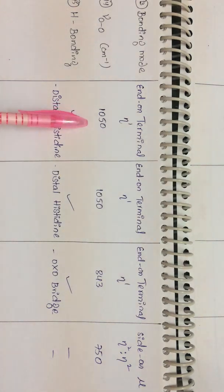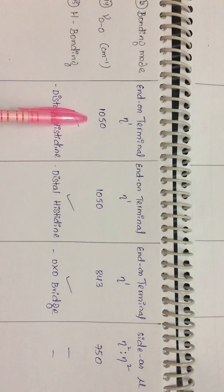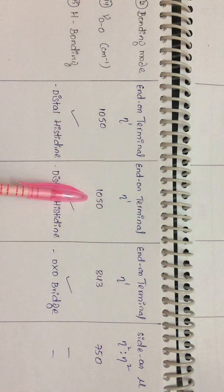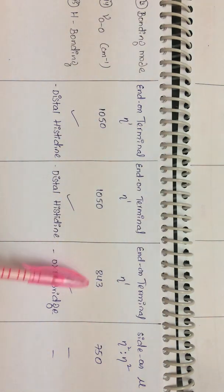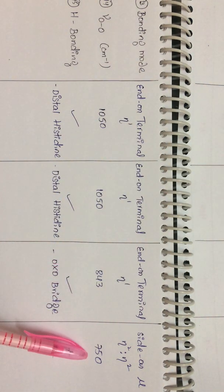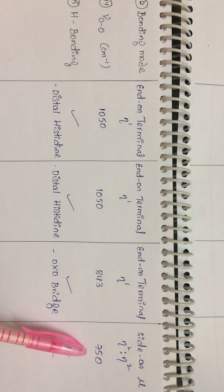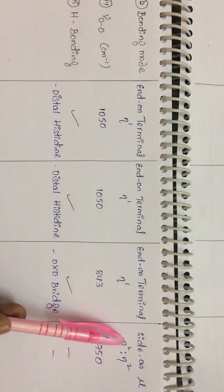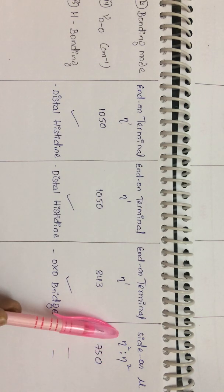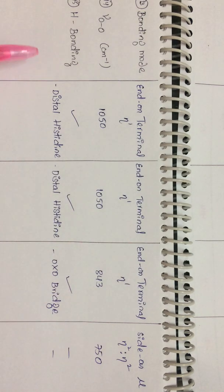Regarding stretching frequency: for hemoglobin and myoglobin it is around 1050 cm⁻¹, indicating a superoxo form. For hemerythrin it is 843 cm⁻¹, around 850 being characteristic of a peroxo form. For hemocyanin it is around 750 cm⁻¹, which is lower than expected for a peroxo form because there are two metal atoms donating electron density into the peroxo form — as more electron density flows in, the stretching frequency drops.